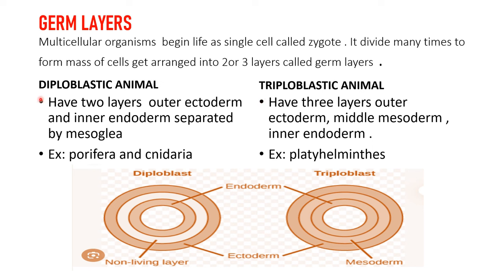Diploblastic — diplo means two — it means the organism has two layers: the outer ectoderm and the endoderm. As seen in the diagram, only two layers are present. Examples are Porifera and Cnidaria.